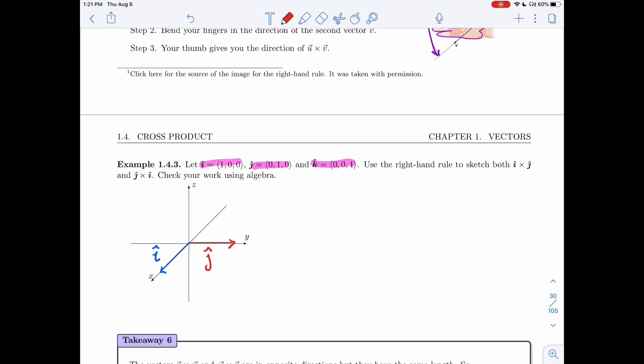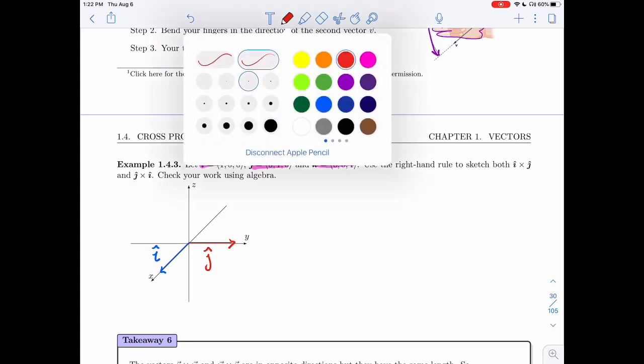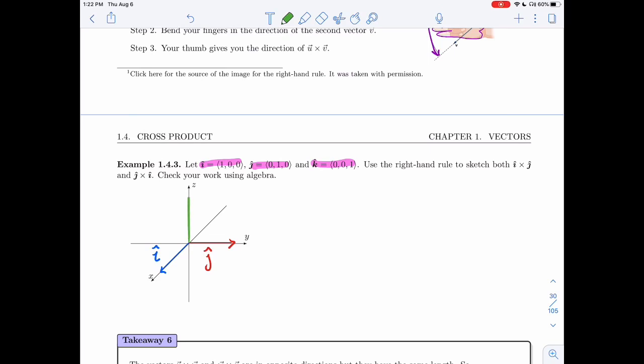I want to take i cross j. Now, this would be easier if you could actually see my hands, but let's take our right hand. And I want to place its palm and its fingers in the direction of the blue vector. The blue vector is sticking out from the page, so I want my hand to stick out from the page. And then I want to be able to bend my fingers in the direction of the red vector, so I want to bend them right. Now, if you've managed to do this, your thumb should be sticking up. So in this case, this is what you should get.